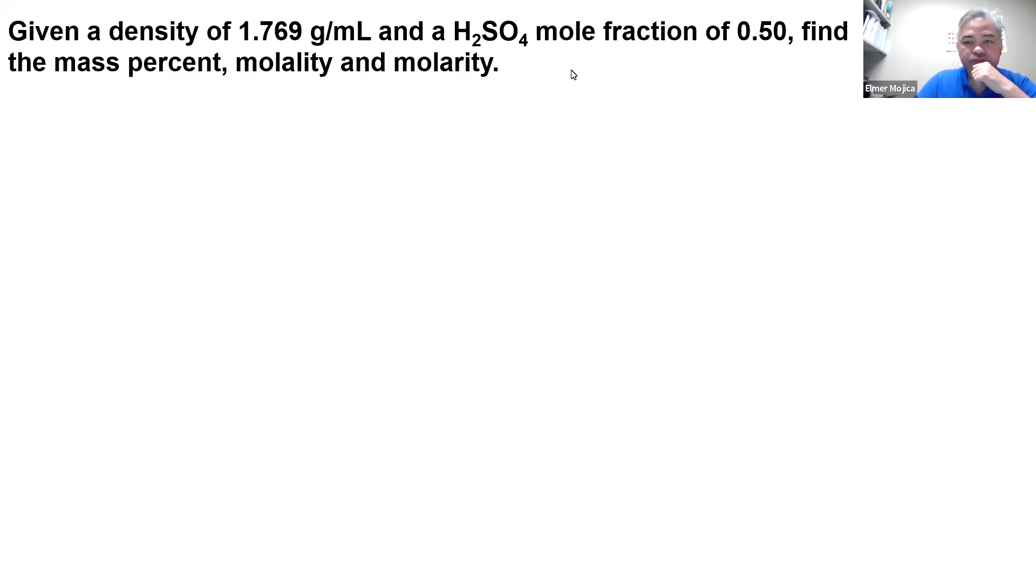Okay, in this problem, given the density of 1.769 grams per milliliter and sulfuric acid mole fraction of 0.500, find the mass percent, molality, and molarity. So if we're going to look at this one, we can have an assumption that there's a 1 to 1 mole ratio between the sulfuric acid and water. Because if you're going to see it, that's 0.5 moles of H2SO4 over 0.5 moles of it and 0.5 moles of water.